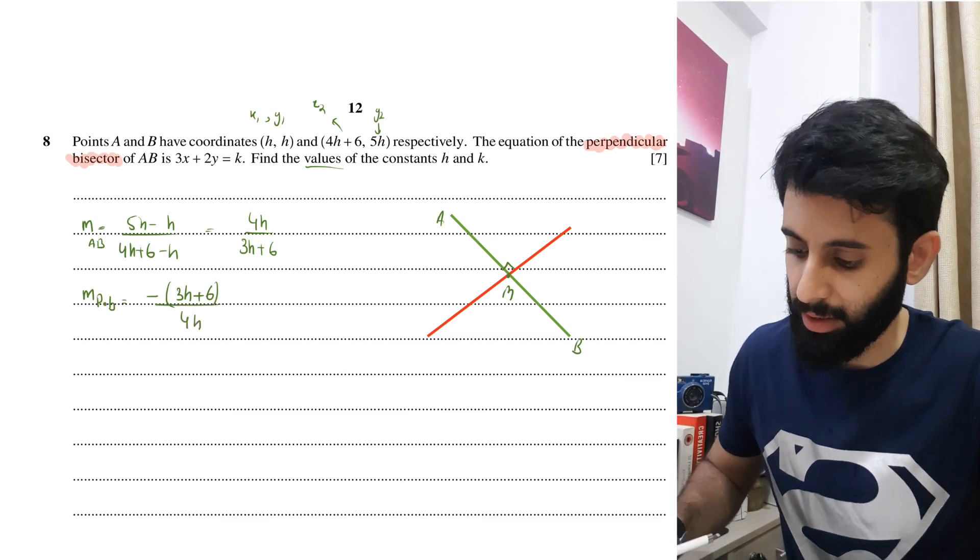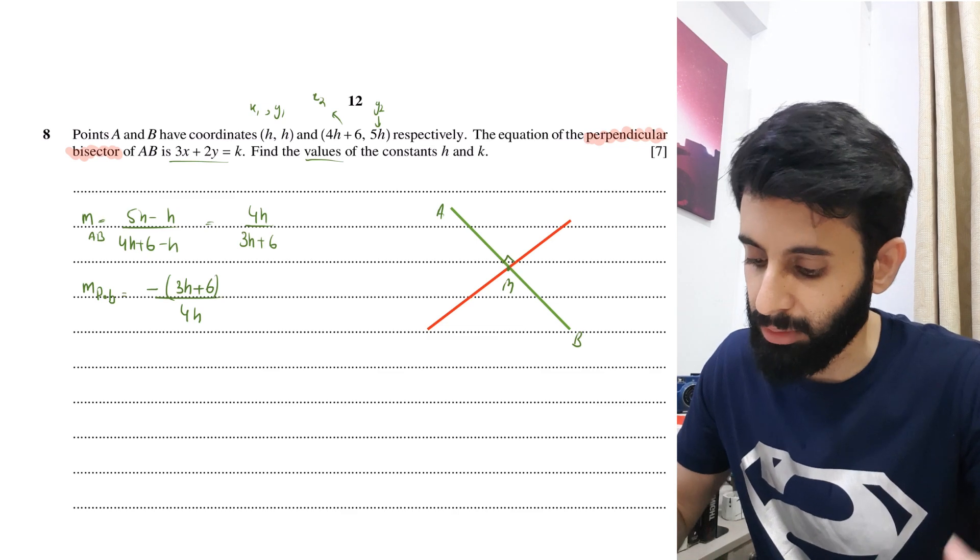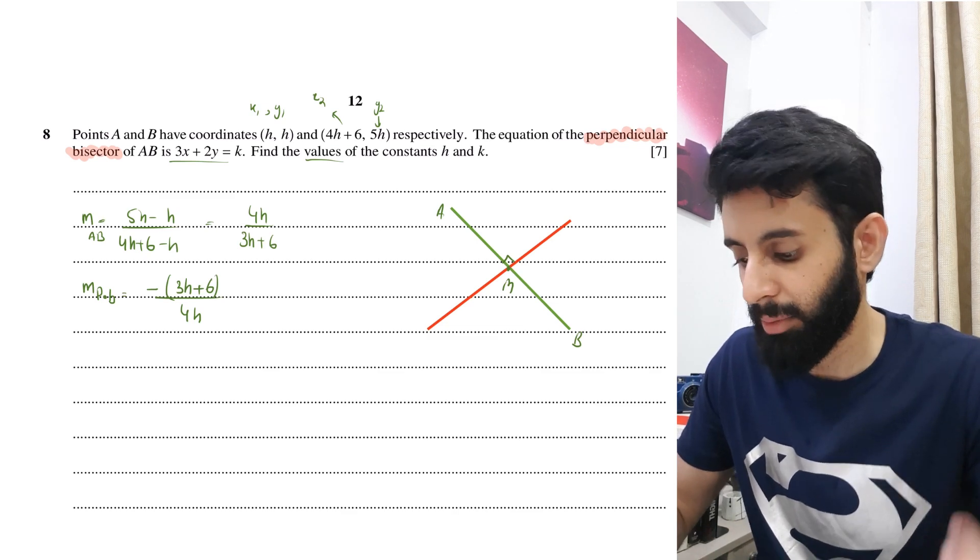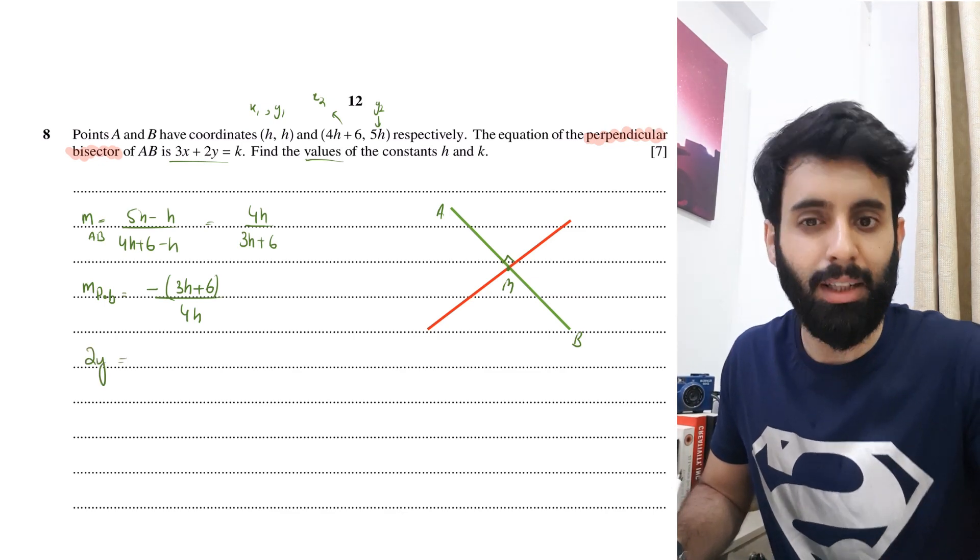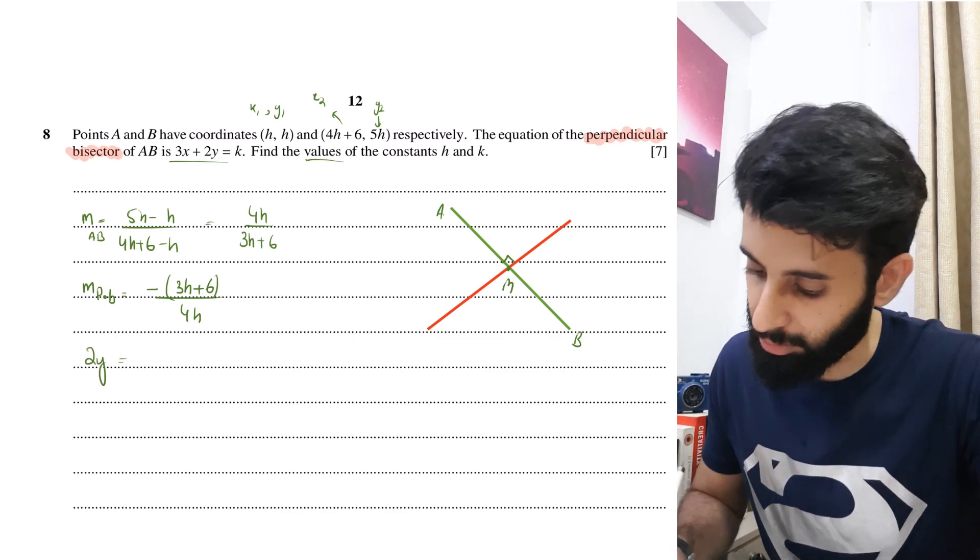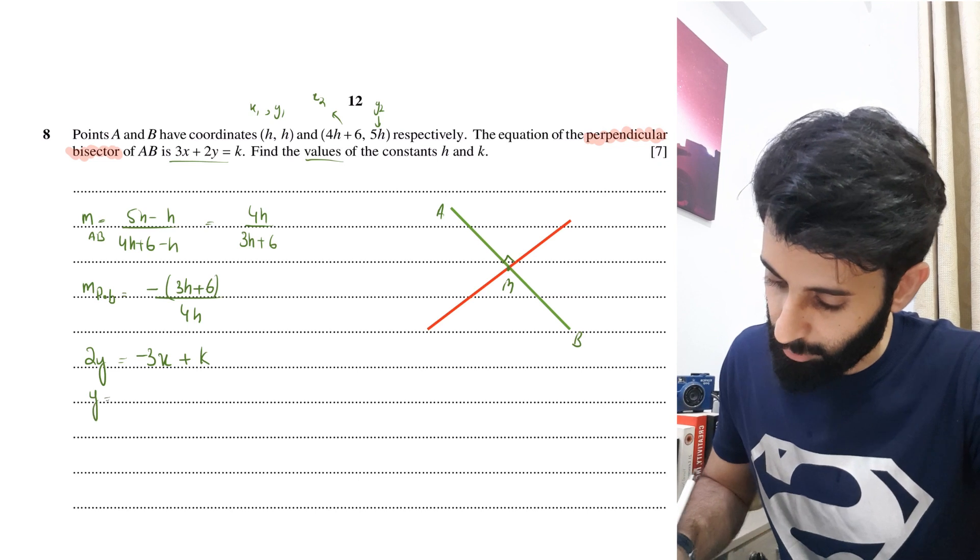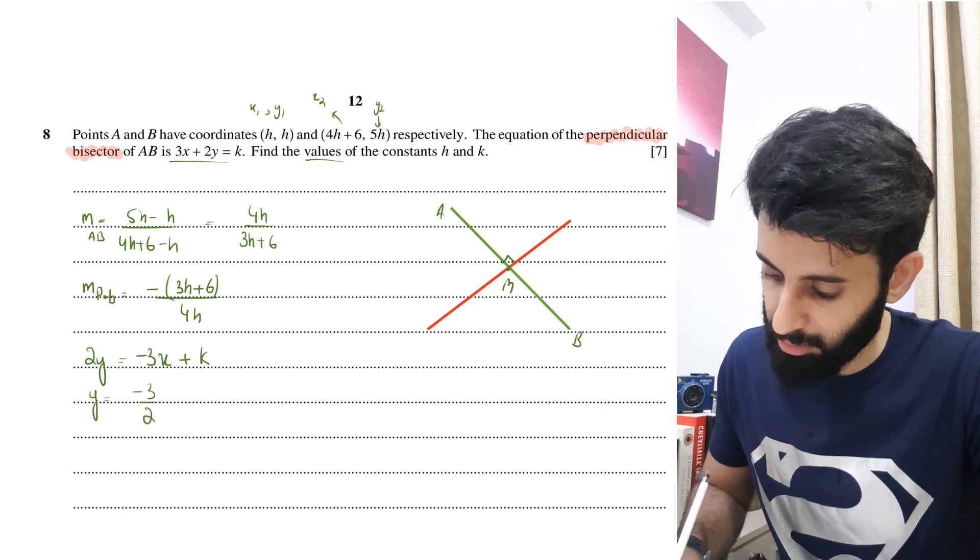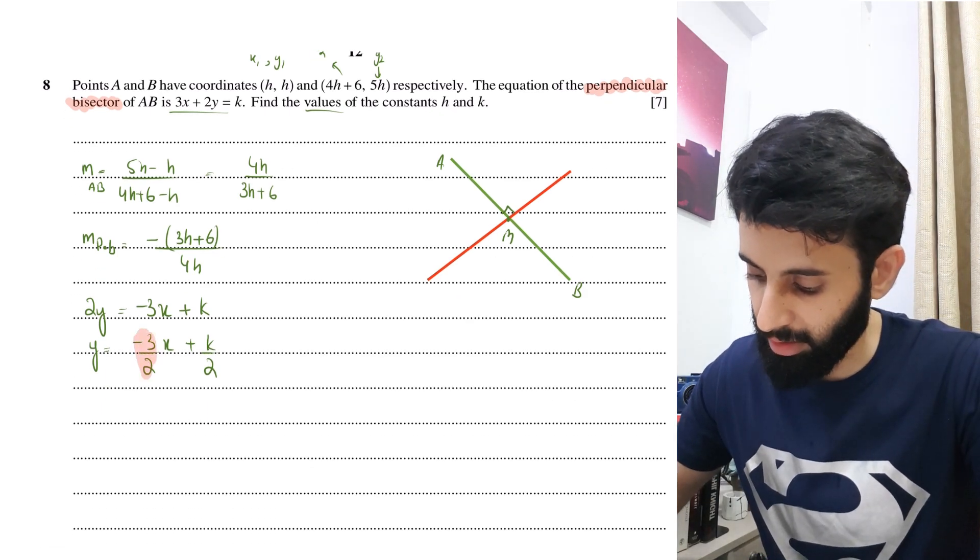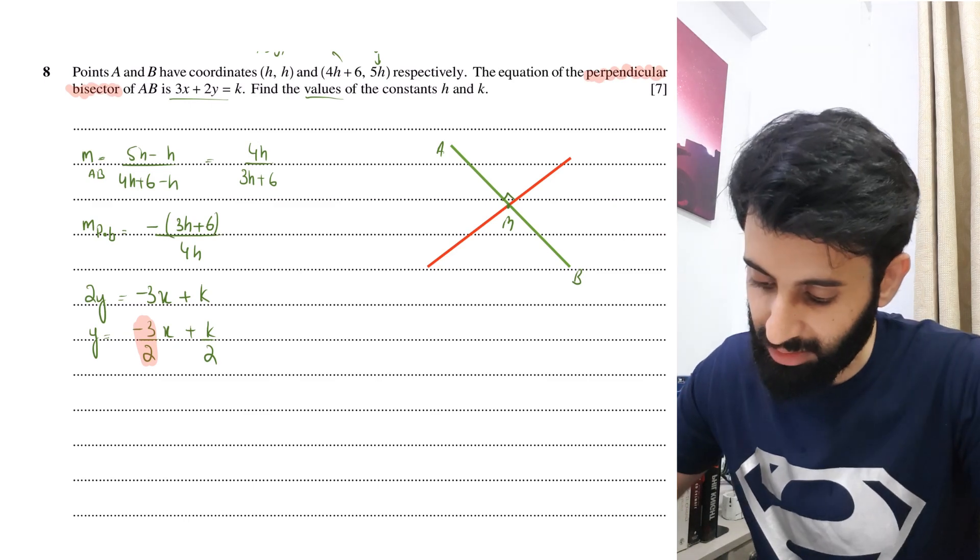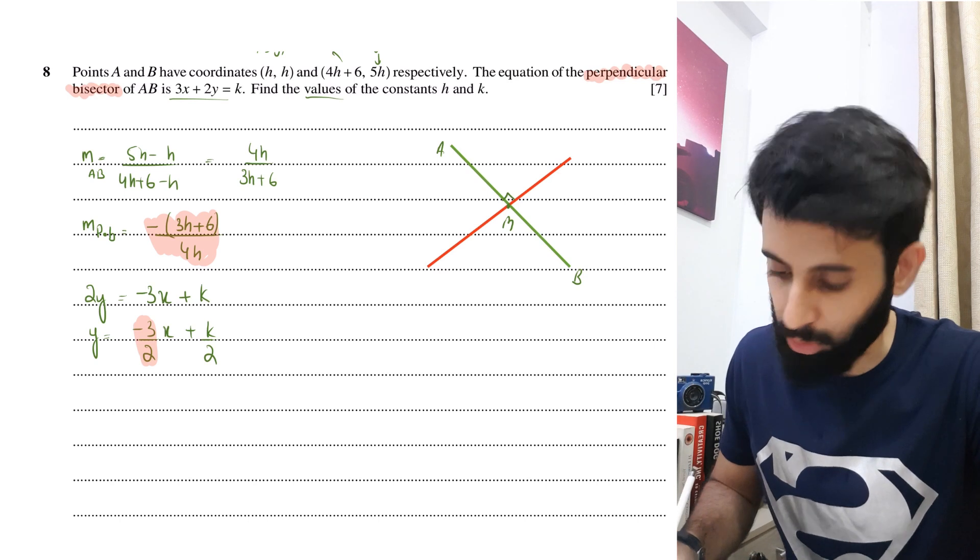Now that we have this sorted out, let's see what we have to do next. We already know the equation of the perpendicular bisector is 3x + 2y = k. We don't have the constant, but we do have the coefficients of x and y. The good thing is we can use these coefficients to figure out what the actual gradient of the perpendicular bisector is going to be. So I'm going to make y the subject. We have 2y = -3x + k, so y equals -3/2 times x plus k/2. That means the gradient of the perpendicular bisector is -3/2, which basically means that that is what -(3h + 6)/4h is equal to. So I'm going to equate the two.